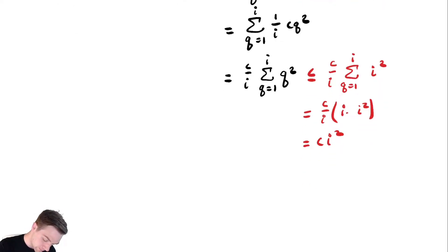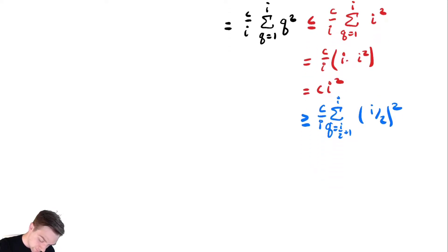Bound it below as c over i. We throw out the first half of the terms. So we go from q equals i/2 plus 1 to i, and we're going to plug in i/2 for q. This equals c over i. There are i/2 terms there, and they all look like i² over 4. So this equals ci² over 8.